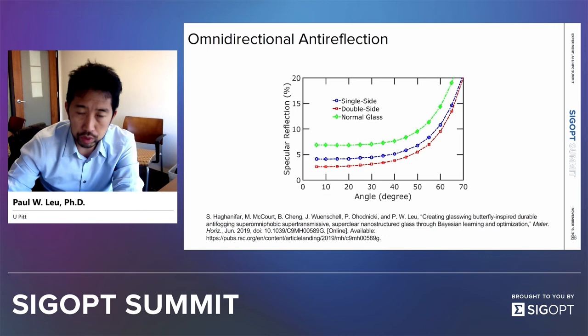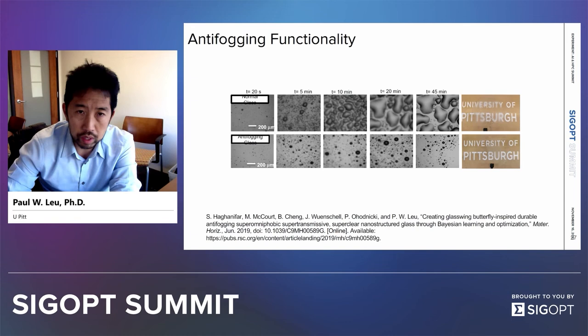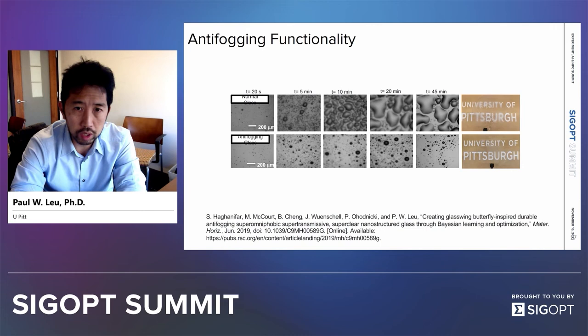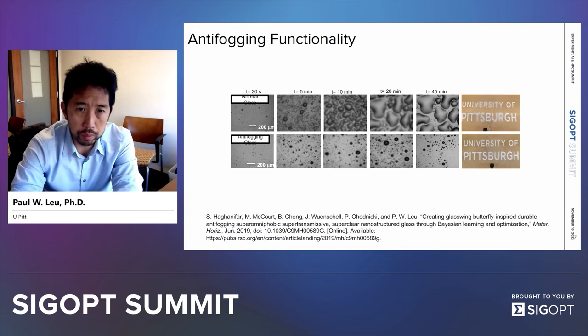This slide shows some of the anti-fogging properties of the glass. In the top row, you see normal glass where water condenses on the surface forming large droplets that obscure your vision. In the second row, this is our nanostructured glasswing butterfly-inspired glass — the droplets are a lot smaller, they can more easily roll off, and there's less obstruction of the light going through.